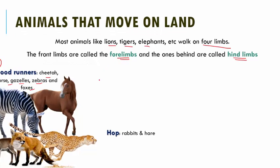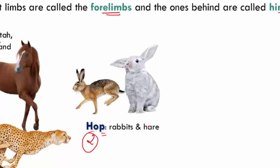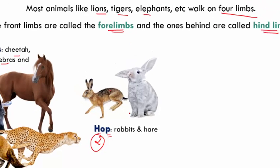The second type are hoppers. Animals like rabbits and hares hop around. If you look at hoppers, their hind limbs are strong and longer than their forelimbs, which is why they are able to hop.